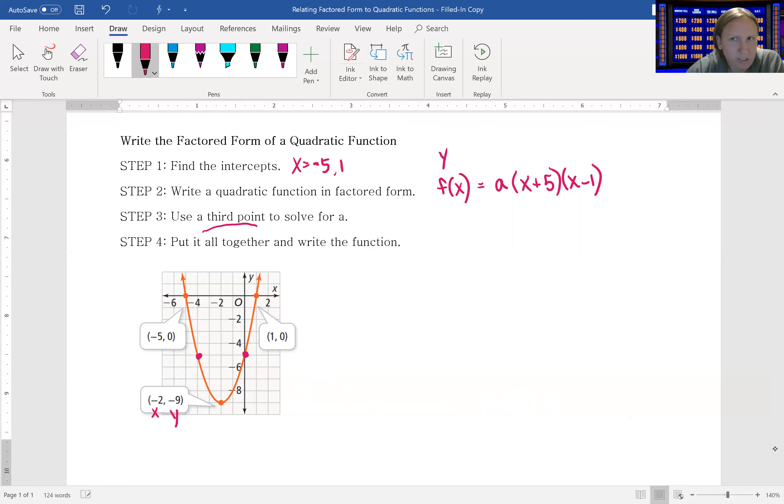So we're going to plug this in temporarily as our x and our y. Remember, f(x) is just the same thing as y, and we're going to solve for the a. Kind of like when we plug things into slope intercept form and find the missing b. In this case, we're just finding that missing a. So our y is -9. We're going to keep a there because we don't know what it is, and then -2 + 5 times -2 - 1.